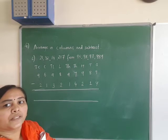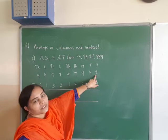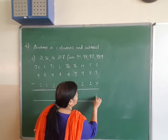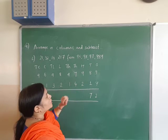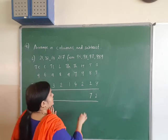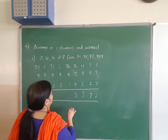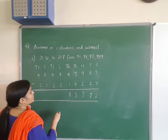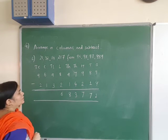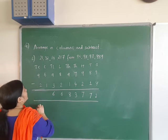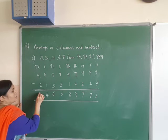Now subtract: 9 minus 7 — this is a bigger number — 9 minus 7 is 2. 8 minus 1 is 7. 9 minus 2 is 7. 7 minus 4 is 3. 9 minus 1 is 8. 8 minus 2 is 6. 9 minus 3 is 6. 5 minus 1 is 4. 9 minus 2 is 7.